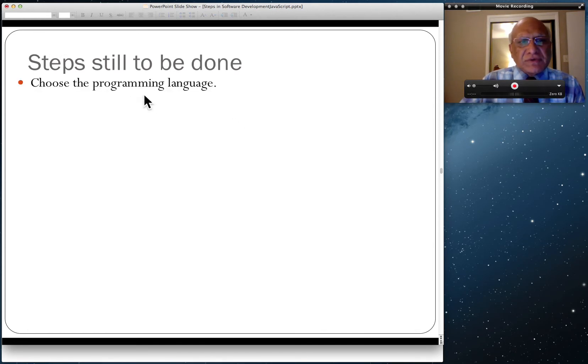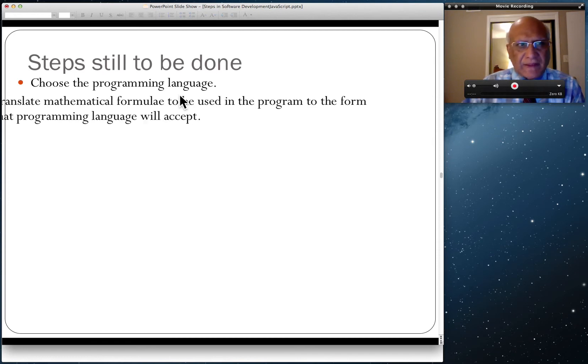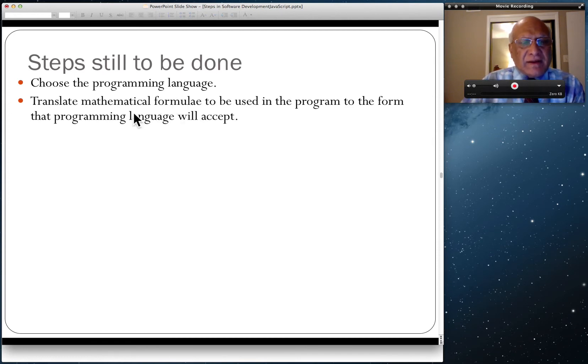First, you have to choose a programming language which will be used to convert your pseudocode to source code. Once you've done that, you have to translate mathematical formulas to be used in your program.